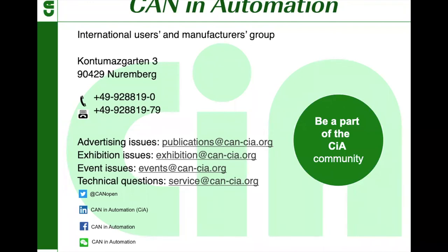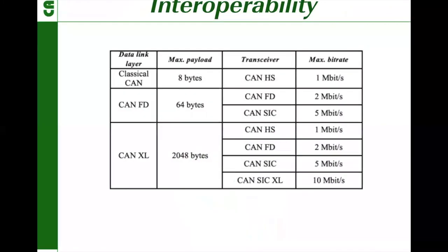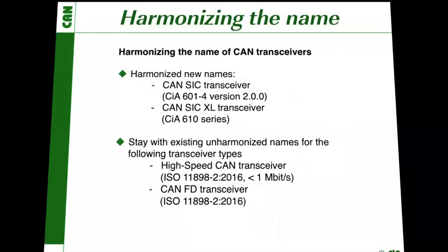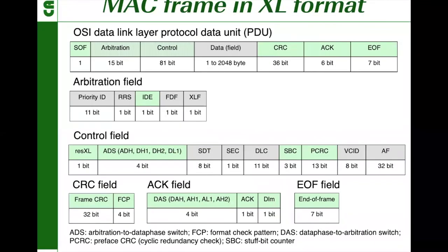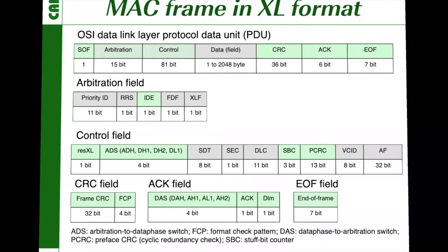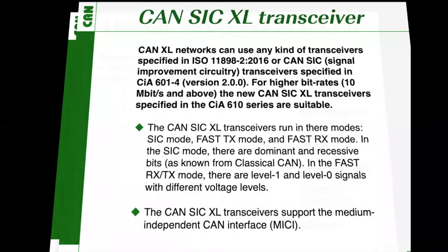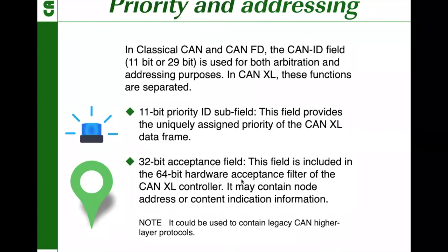Q&A: One question: what is the motivation for the 32-bit acceptance ID? This 32-bit acceptance ID provides the content of the frame — it is a number indicating which content could be in this frame. In classical CAN and CAN-FD, this function could also be used but was not specified. Now in CAN-XL, we specify the field for this function so it is harmonized.